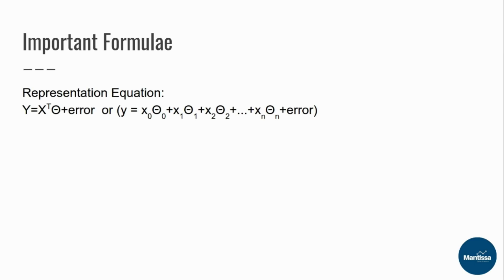The first formula is the representation equation, which is given by: y = x-transpose times theta, plus some error term. Expanded, this is y = x₀θ₀ + x₁θ₁ + x₂θ₂ + ... + xₙθₙ.